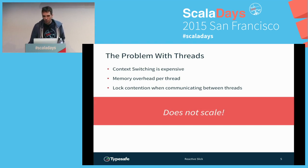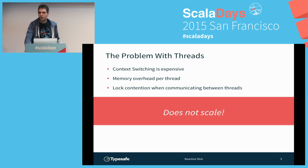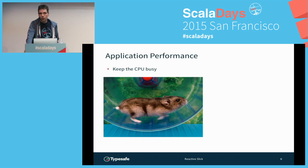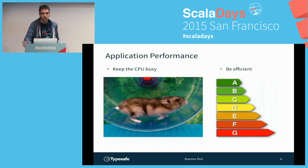You probably already know about this because you're writing Play and Akka applications — we're not doing J2EE here where we have to block. So we don't just have to keep the CPU busy; we also want to avoid overhead. That means we need to be efficient.